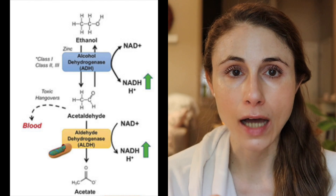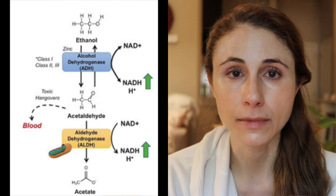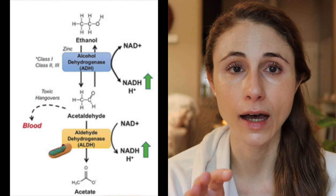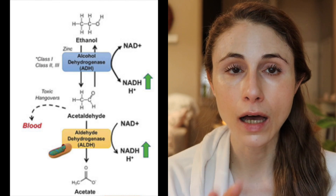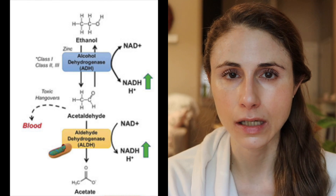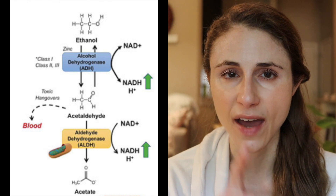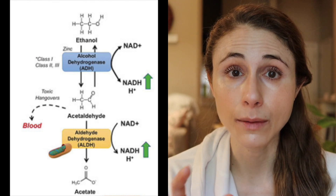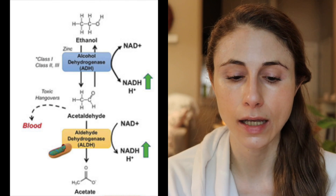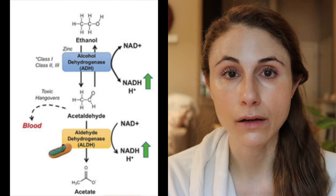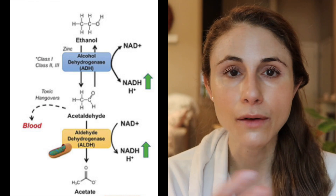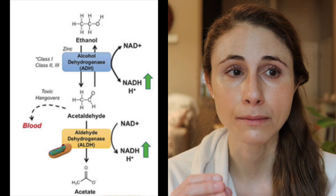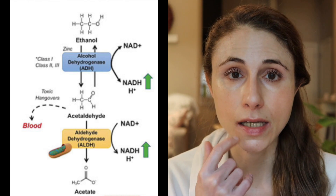Acetaldehyde is an intermediary metabolite in the detox of alcohol, but it's actually very inflammatory and a known carcinogen. A lot of the adverse effects of alcohol — not only on your skin but on your total body — are due to that. Your liver then converts it to a compound called acetate using an enzyme called aldehyde dehydrogenase. But when you consume large amounts of alcohol, that reaction can only go so quickly, and that acetaldehyde does build up and has some negative consequences to your health.